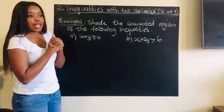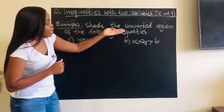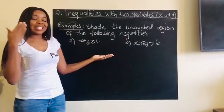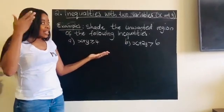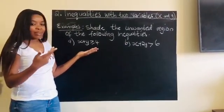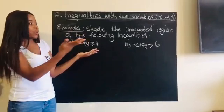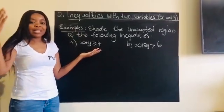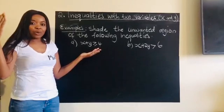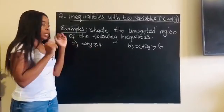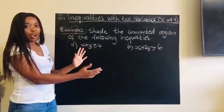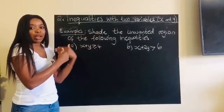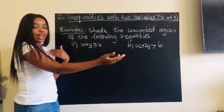The question is saying: shade the unwanted region of the following inequalities. What does that tell you? It tells me I need to have a graph. Just when I see 'unwanted region' from linear programming, I know I need to change that inequality. I want to have a graph and then choose which part — which side — of my graph I should shade.